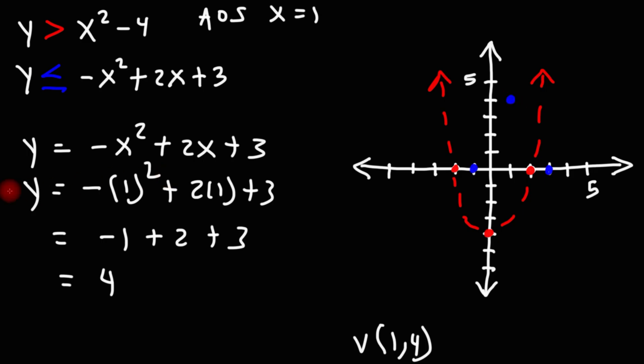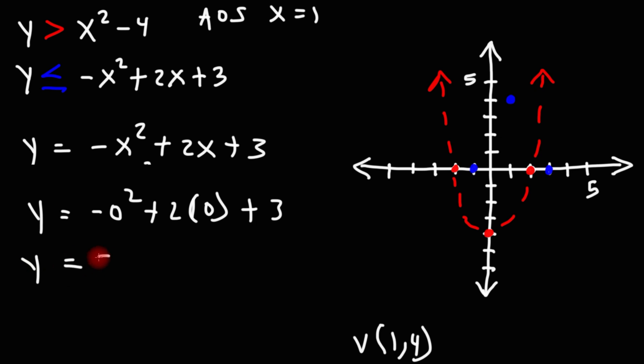We could also find the y-intercept. If we replace x with 0 and calculate the value of y, we'll get the y-intercept, which is going to be 3. So we have another point, 0 comma 3.